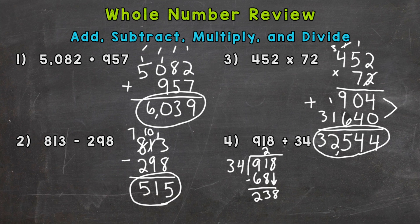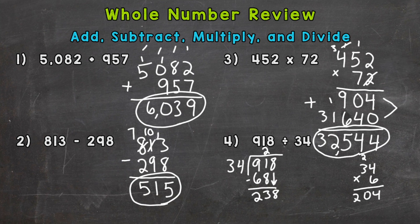Now we have 238 divided by 34. You might not know off the top of your head how many whole 34s fit into 238, so it might take some estimating and checking. For example, I know 34 times 10 is 340 — well, 238 is well below that. So maybe we start by trying 34 times 6, which gives us 204. Let's try 7 to see if we can get any closer. 34 times 7 actually hits 238 exactly.